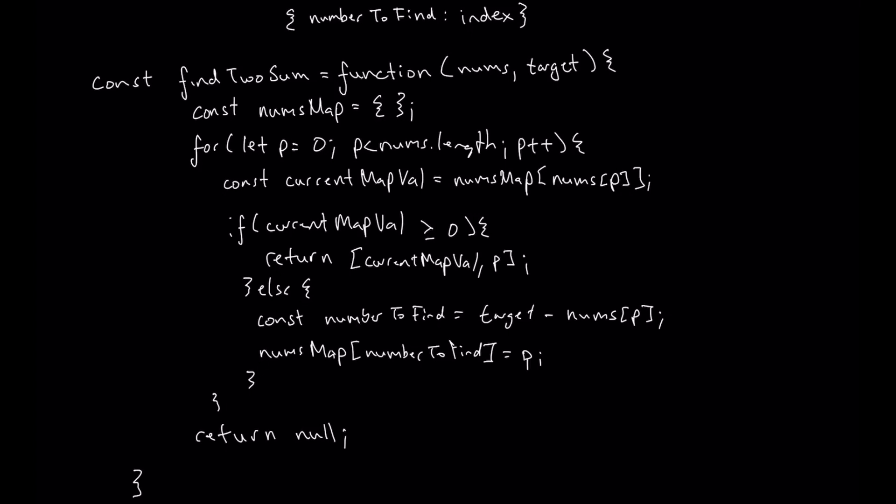So here, our time complexity is only this one for loop. This for loop is the only thing that scales with an increasing input of our nums array. Of course, as nums grows, so does the amount of loops we do, but it's only one loop. So we can say that we have a time complexity now of O(n).